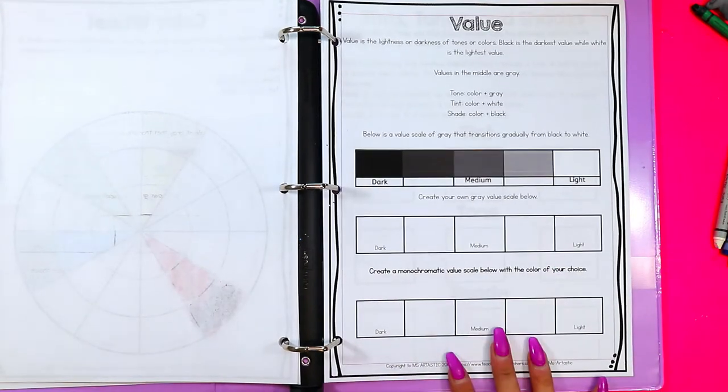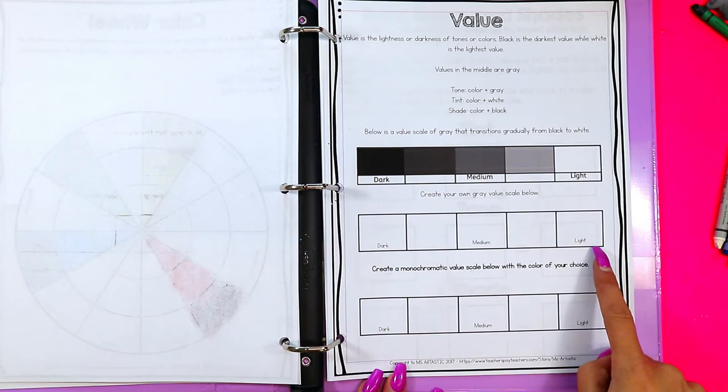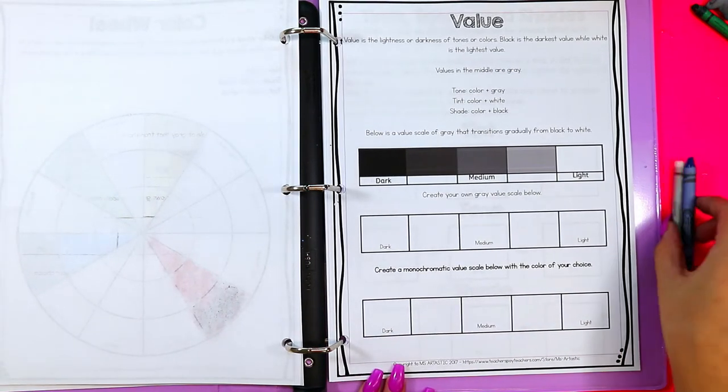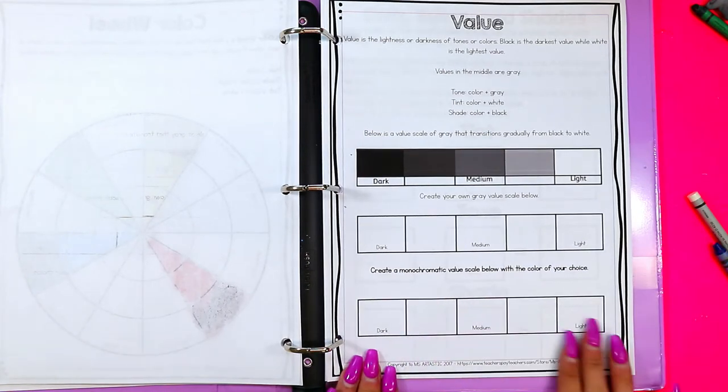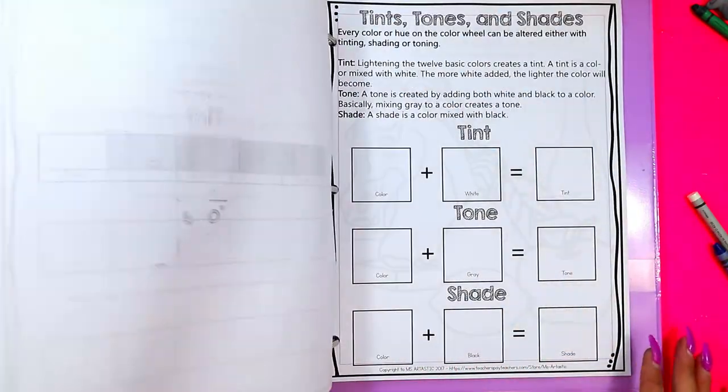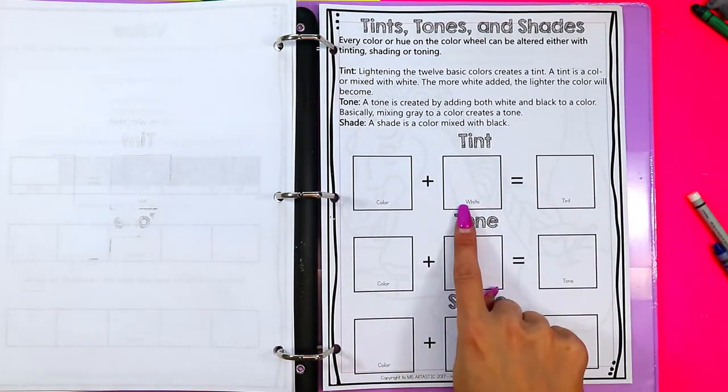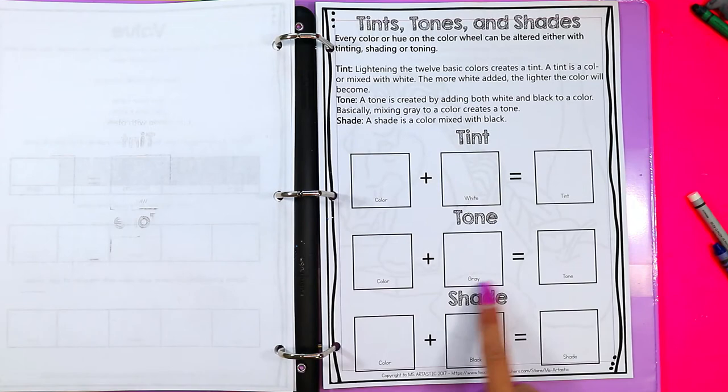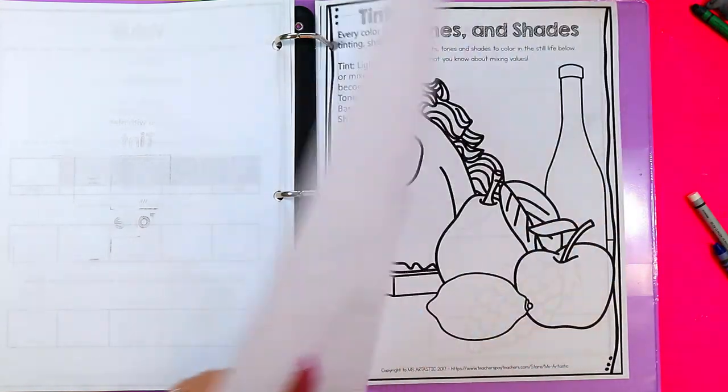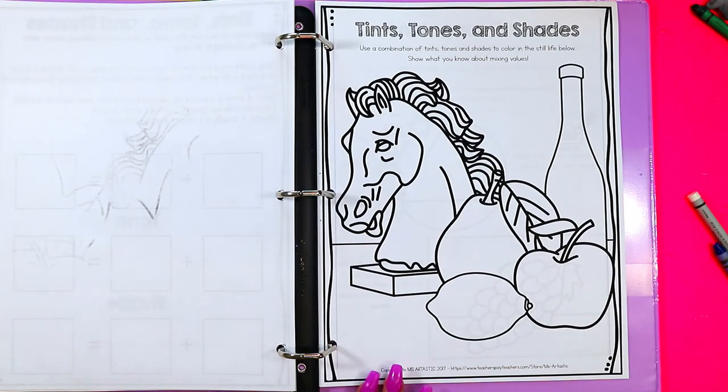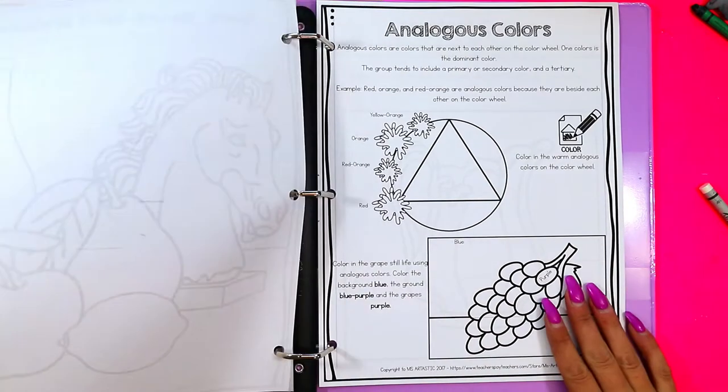It also shows doing value and creating a value scale. So they're going to make their own gray value scale, but then also make a monochromatic scale using a color and medium of their choice. Pencil crayon would be perfect for that. They'll do tint, tones, and shades. So tint is color plus white makes a tint, color plus gray makes a tone, color plus black makes a shade.